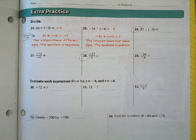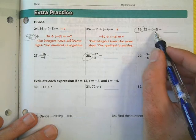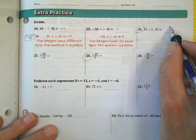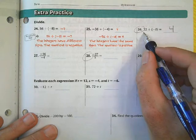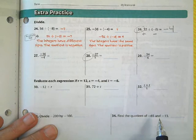Moving over to our next page here, some more sample extra practice. If I have 32 divided by 8, that's 4, but because I have a positive and a negative, they're different, I end up with a negative answer.